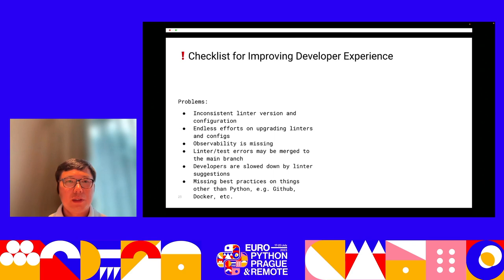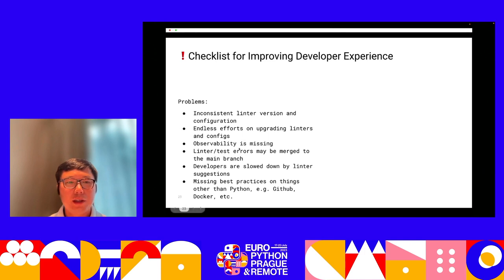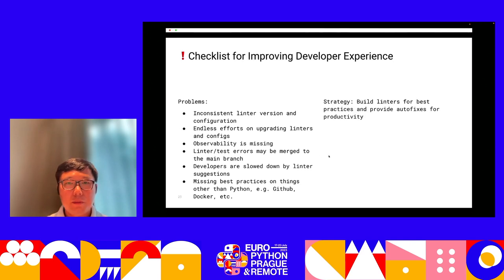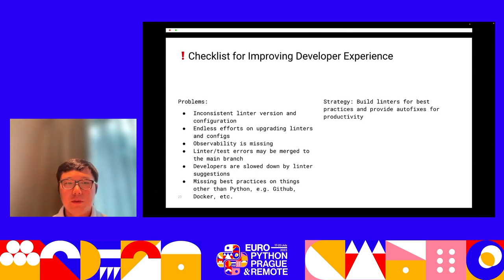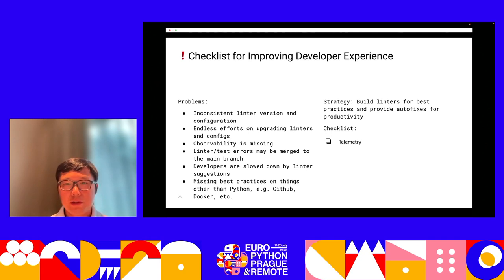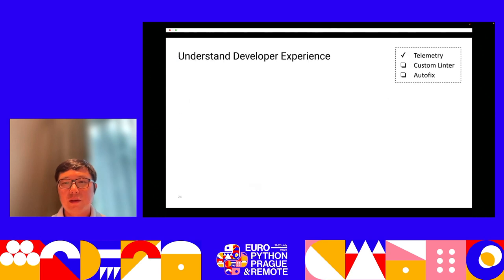Now let's look into the second category of problems: the full developer experience. We talked about inconsistency, effort, and difficulty understanding what's going on. The strategy to solve these problems is to build linters for any best practice we want to apply and provide autofixes to help developers fix issues in a productive way. The checklist includes telemetry, custom linters, and autofixes.